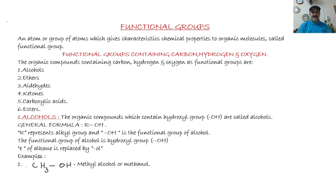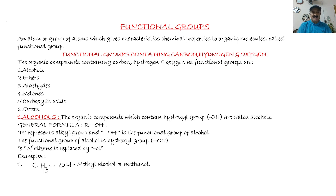Today I will explain only those functional groups which contain carbon, hydrogen, and oxygen. The organic compounds containing carbon, hydrogen, and oxygen include: number one, alcohols; number two, ethers; three, aldehydes; four, ketones; five, carboxylic acids; and six, esters.